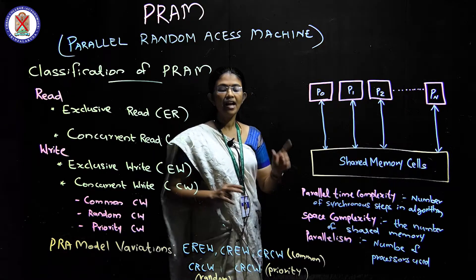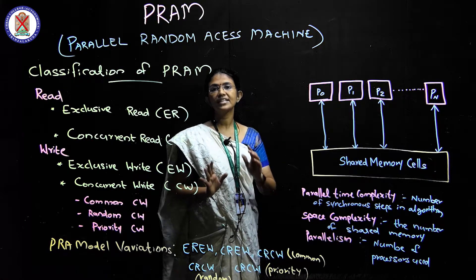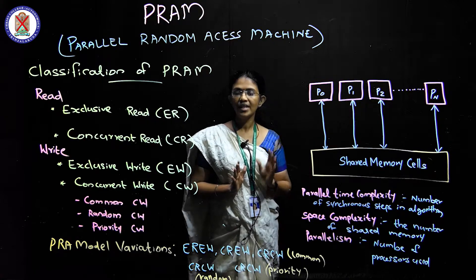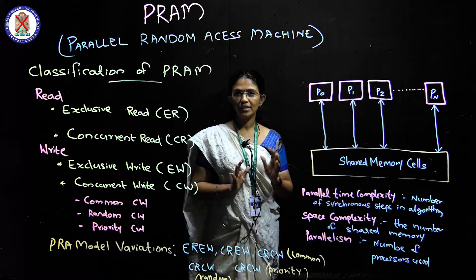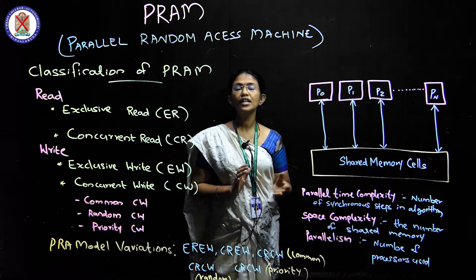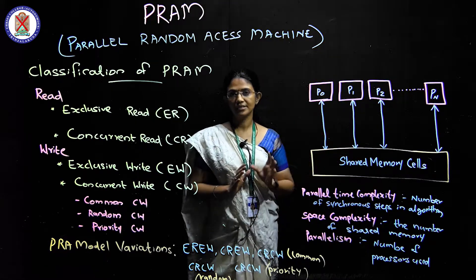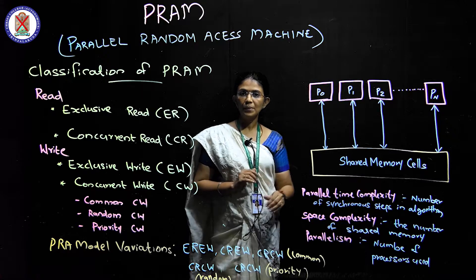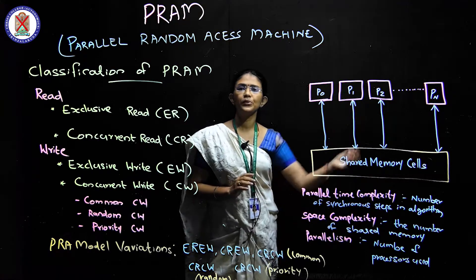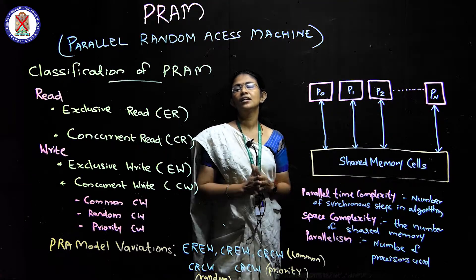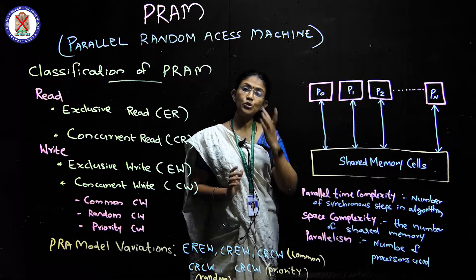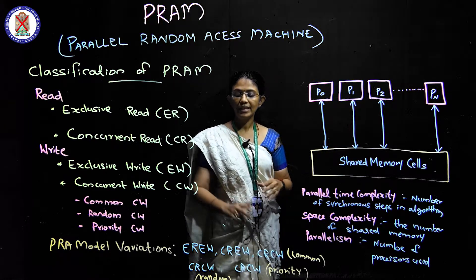Concurrent Read and Concurrent Write — CRCW — has three variations that we have discussed: Common Data, where all processes write the same value; Random, where a randomly chosen processor writes; and Priority, where the highest priority processor writes. The Priority model is stronger than the Random model.